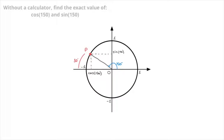Now that we've made a note of that, we reflect point P across this vertical axis. And in doing so, we define a new point, which we'll call Q. I'll add that here in blue, and I'll add the radius OQ, like so.